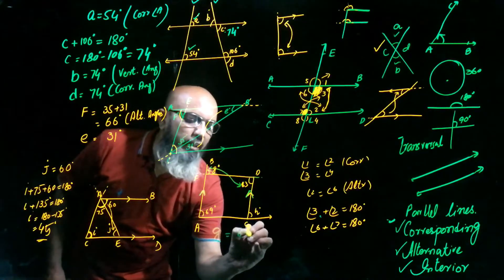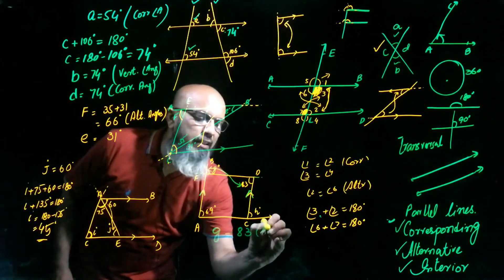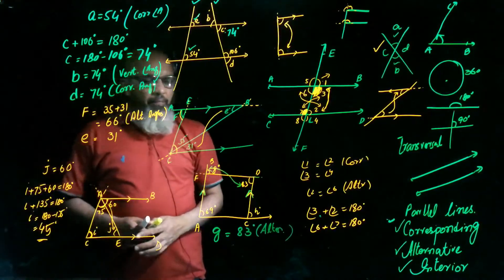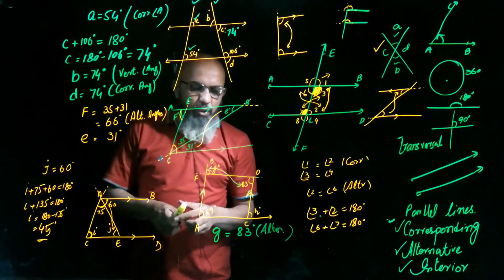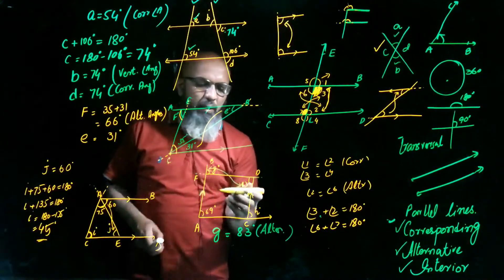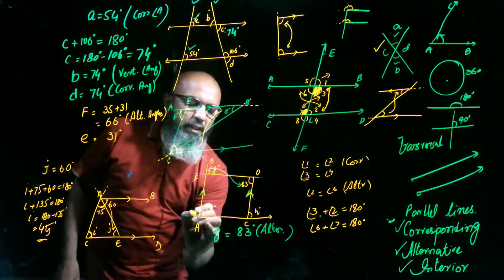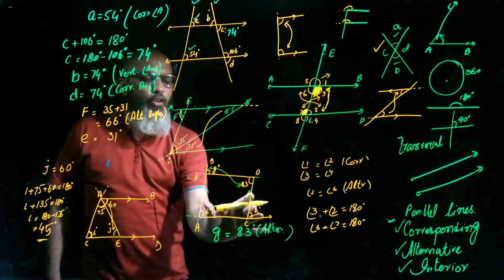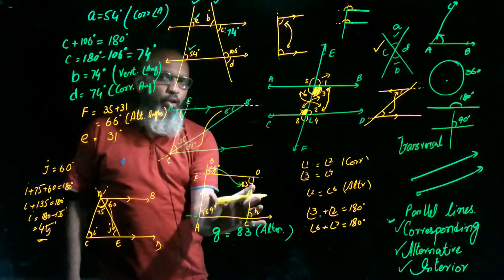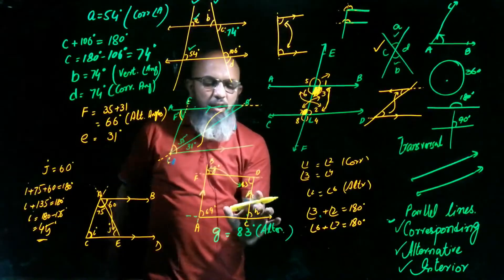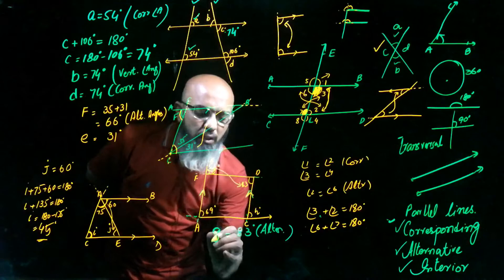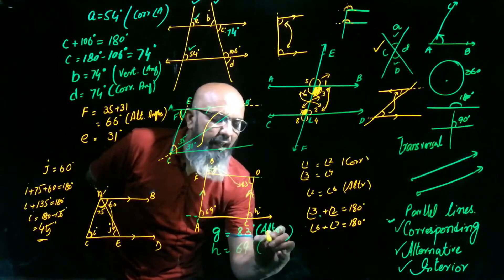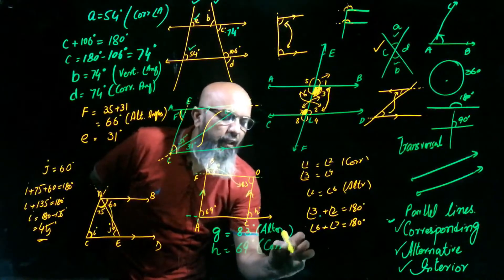For angle G, that is alternate angles. Now comes the second transversal, which cuts the parallel lines here. These angles are corresponding angles because they are on the same side of the transversal. So angle H equals 69 degrees, and that is corresponding angles.